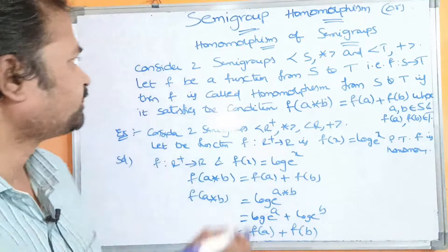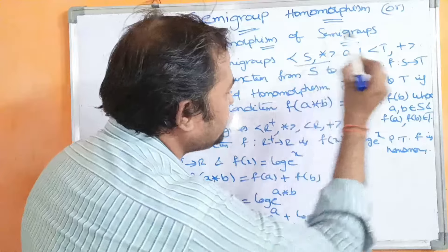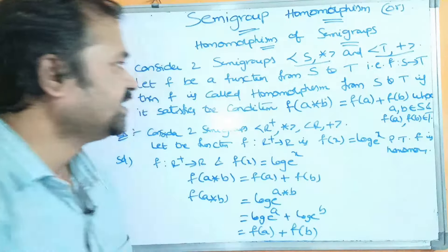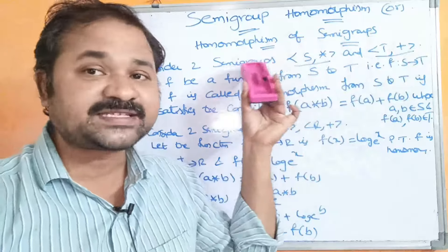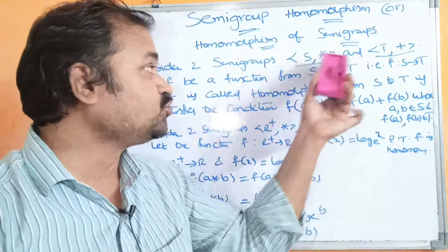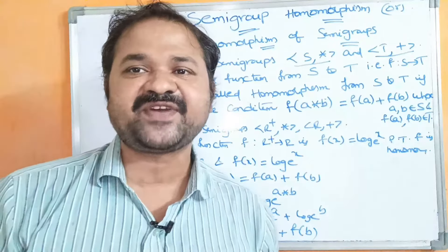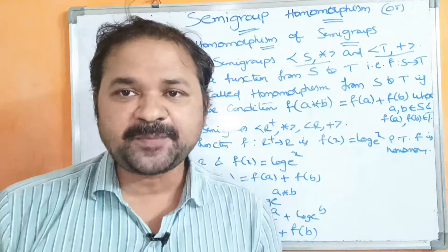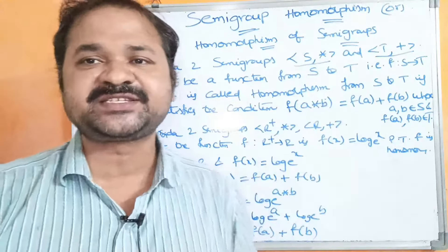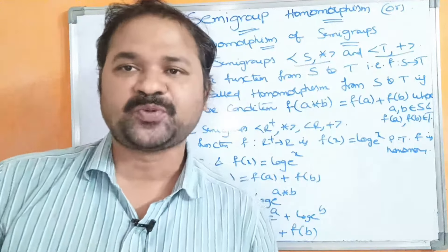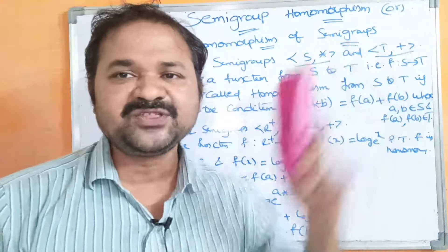Let us see the definition. Consider two semigroups (S, ★) and (T, +). These two algebraic systems are semigroups, meaning they must satisfy two conditions: closure property and associative property. We have to prove homomorphism between those two semigroups.